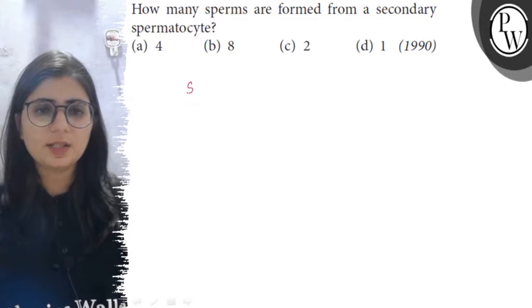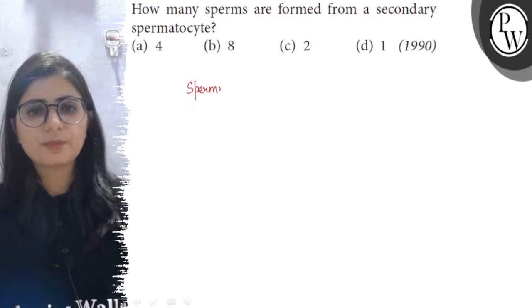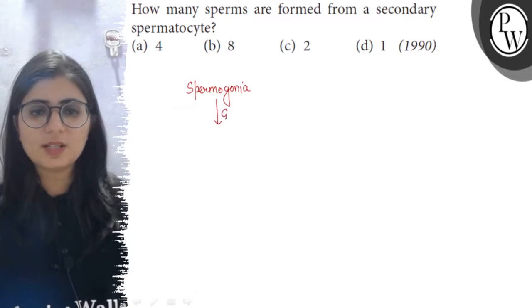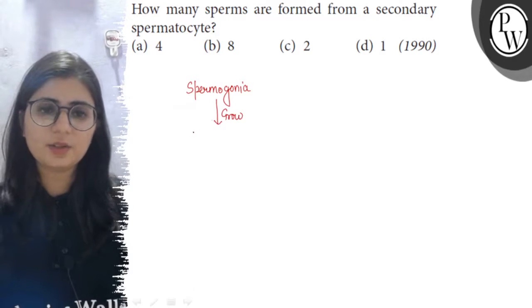So let's see what happens during spermatogenesis. The male germ cells or spermatogonia, they grow in size and by their growth they will form the primary spermatocyte.